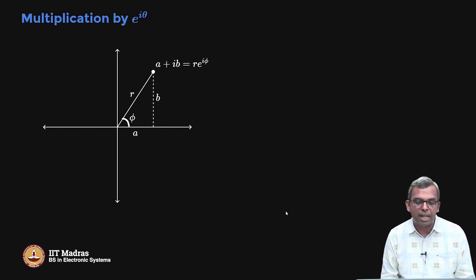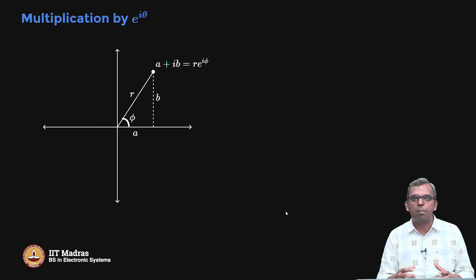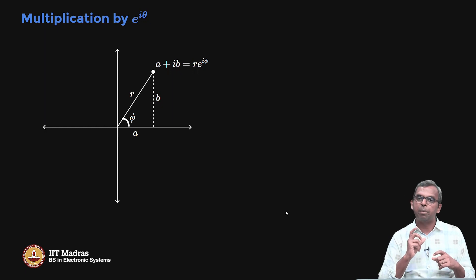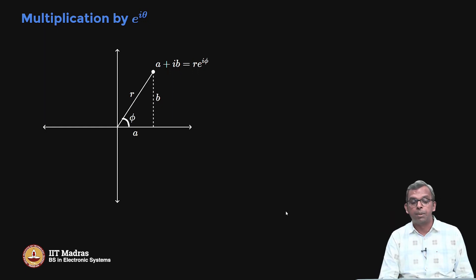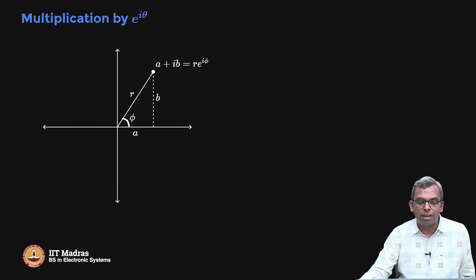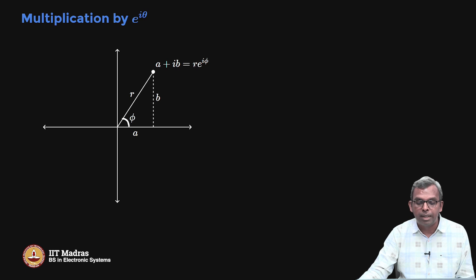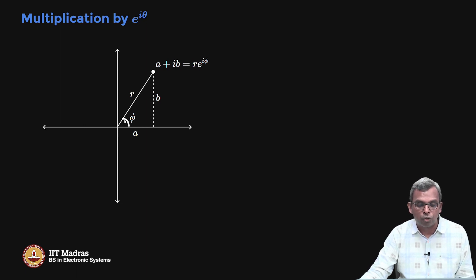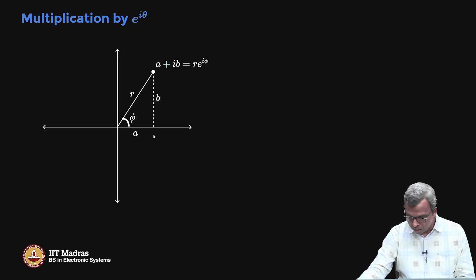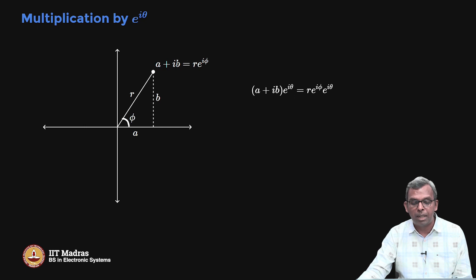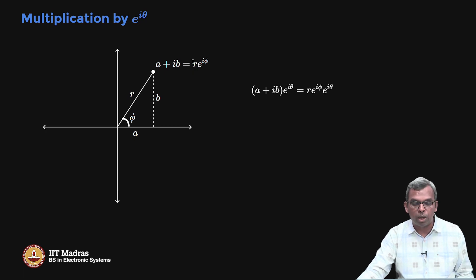Now let's look at multiplication by e^(iθ). If you have A + iB, in polar coordinates it can be written as R·e^(iφ), where R is the magnitude and φ is the angle. This comes from the fact that A = R cos φ and B = R sin φ, so A + iB = R(cos φ + i sin φ) = R·e^(iφ). This is a very important connection between the complex exponential and polar coordinate representation.